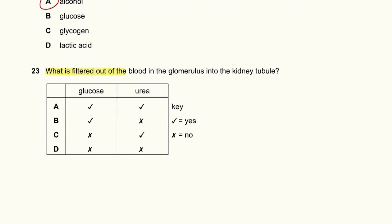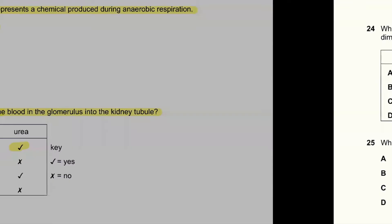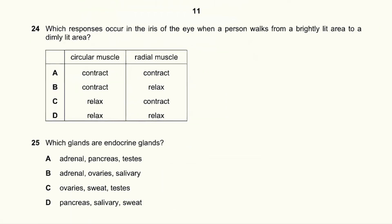Question 23: What is filtered out of the blood in the glomerulus into the kidney? Both glucose and urea are filtered out of the blood in the glomerulus. However, later on the glucose is reabsorbed back, whereas urea is not reabsorbed.